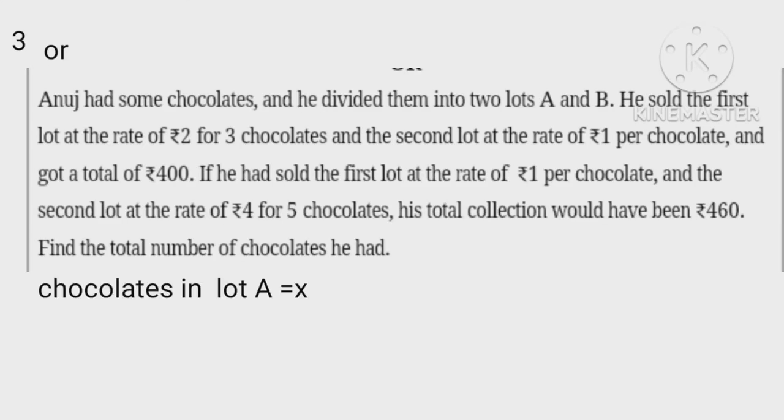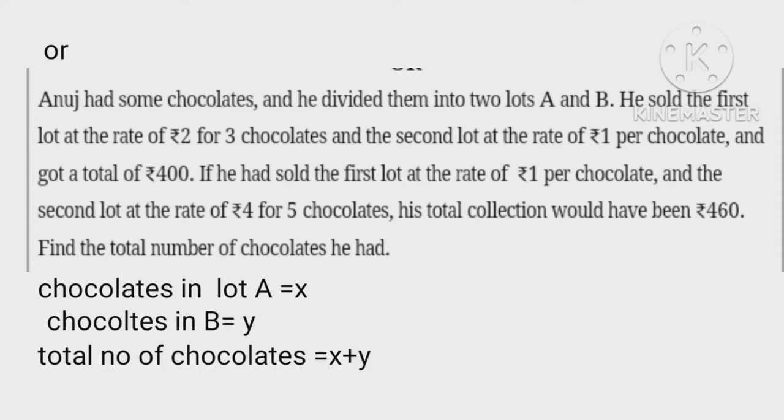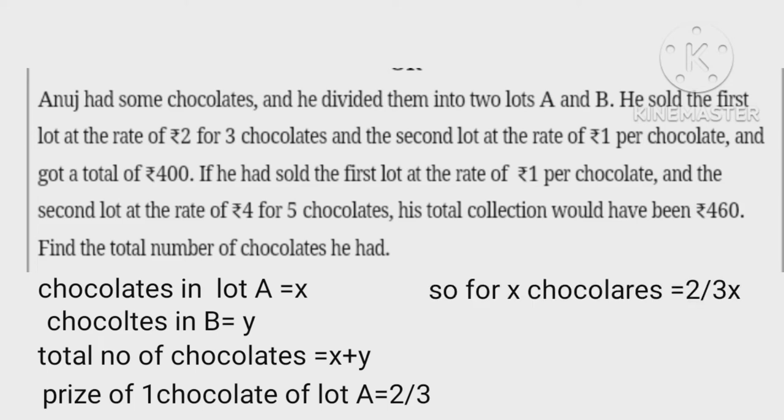Let the number of chocolates in lot A be x and let the number of chocolates in lot B be y. Total number of chocolates equals x plus y. Price of one chocolate equals 2 rupees. So for x chocolates equals 2 upon 3 times x.